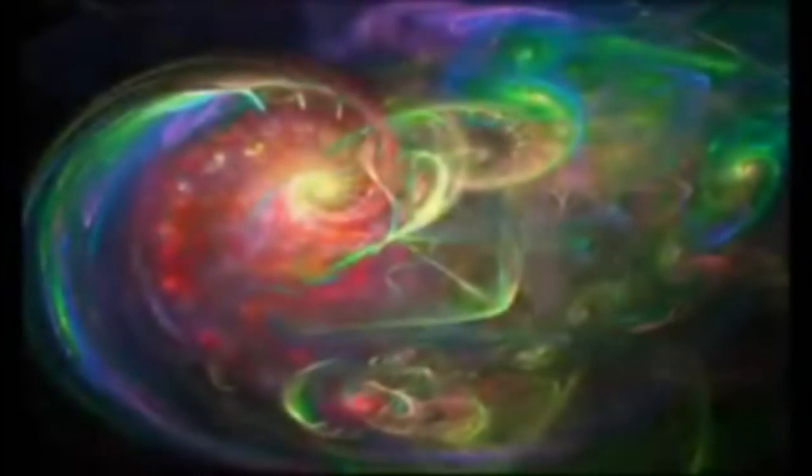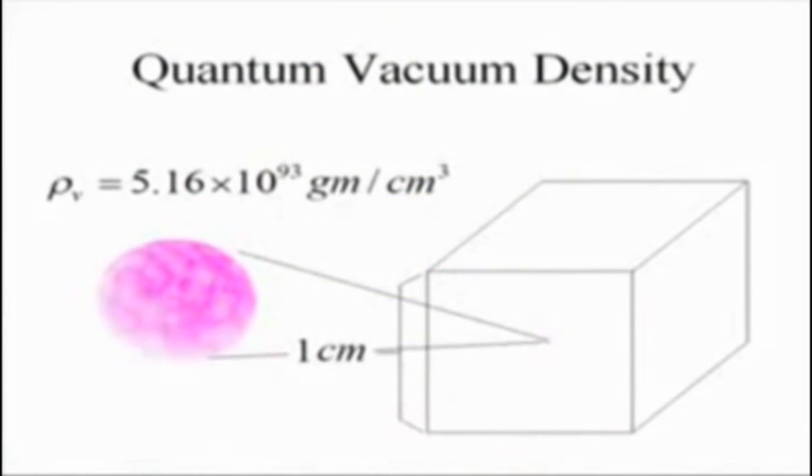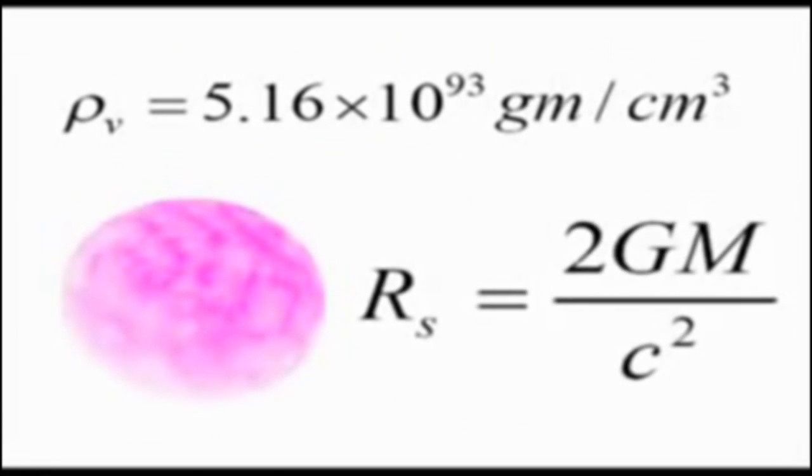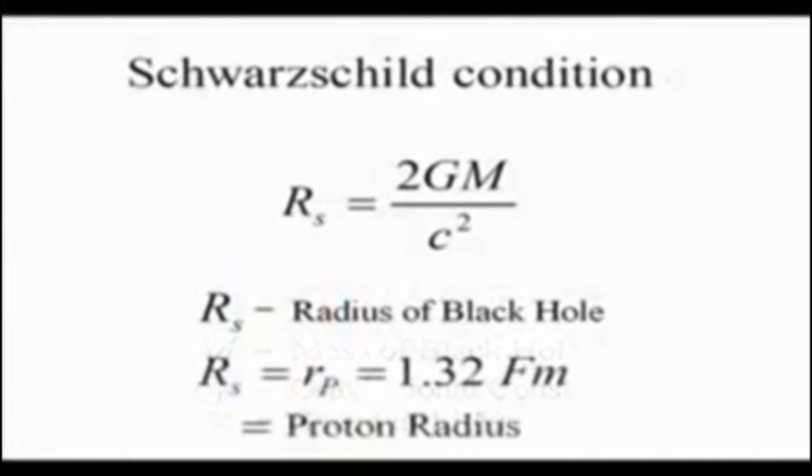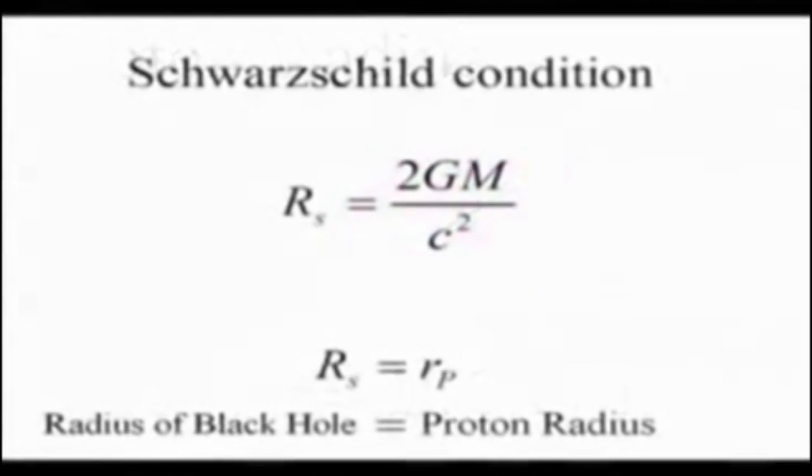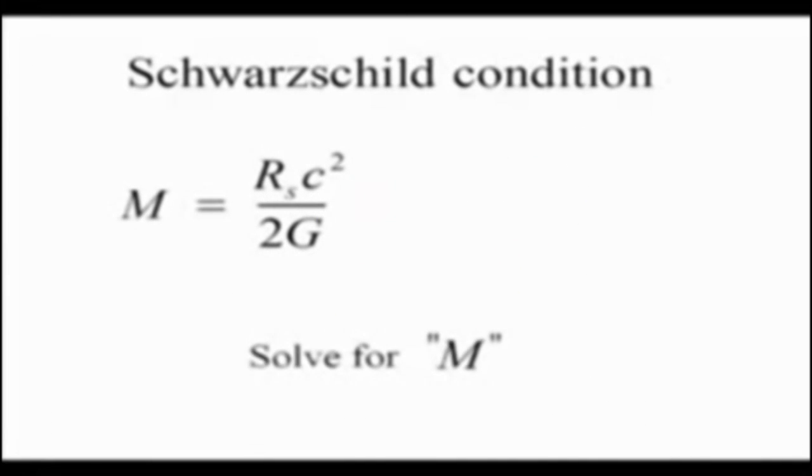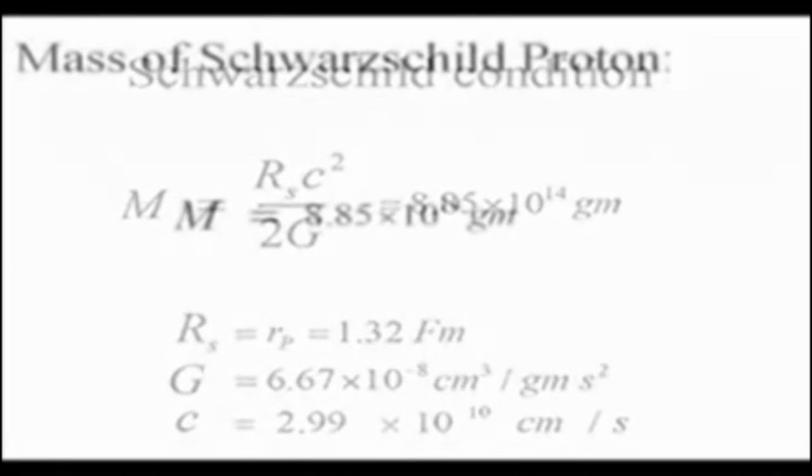We then calculate what proportion of the total vacuum energy density available in a proton volume is necessary for the nucleon to obey the Schwarzschild condition for a black hole, where the radius of our black hole is now 1.32 femtometers, the radius of a proton, and we solve for M. The mass needed to obey the Schwarzschild condition for a proton radius of 1.32 femtometers is 8.85 times 10 to the 14th grams.